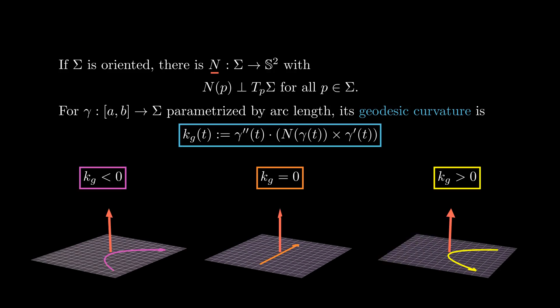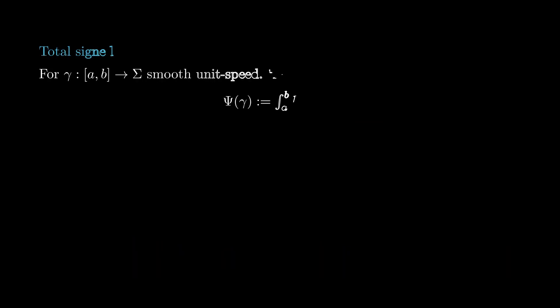Recall that the geodesic curvature of a smooth unit-speed curve gamma in a surface is defined by a formula measuring how much the curve is bending — positive where it is bending left and negative where it is bending right. With this, we define the total geodesic curvature of gamma to be the integral of this quantity.